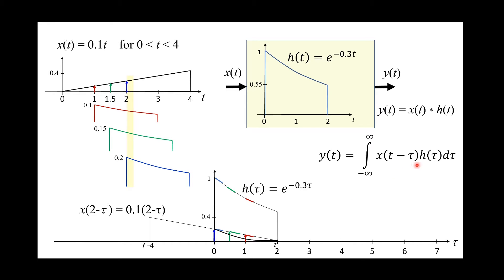Mathematically, it doesn't matter which one you rotate — you can rotate the input or you can rotate the impulse response. In general, we rotate the signal that makes the integration easier. But it is easier to relate convolution to the system's processing of the input if we rotate the impulse response.